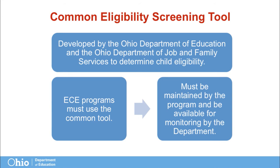The form has two parts. The first part is for ECE-funded children and can also be used as the first part of the application for families seeking publicly funded childcare. If, after completing the first part of the form, a family is screened as potentially eligible to receive PFCC, the program will give them the second part and instruct them to contact the local JFS agency to determine eligibility. Any questions about the second part of the form must be directed to Job and Family Services.